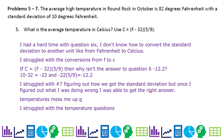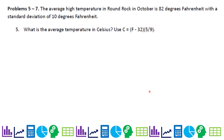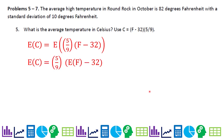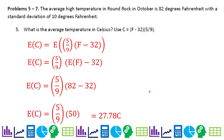Problems 5 and 7: the average high temperature in Round Rock in October is 82°F with a standard deviation of 10°F. To convert to Celsius, use C = (F − 32) × 5/9. For the expected value, plug in 82: (82 − 32) × 5/9 = 27.78°C.